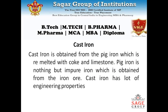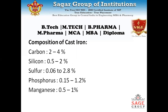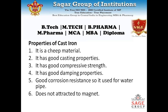When we purify this pig iron from the blast furnace, we purify the iron and the result is known as cast iron. The composition of cast iron is: carbon 2–4%, silicon 0.5–2%, sulfur 0.06–2.8%, phosphorus 0.15–1.2%, and magnesium 0.5–1%.